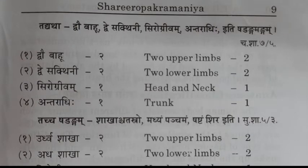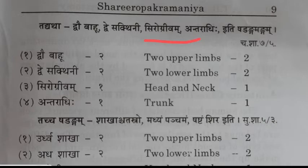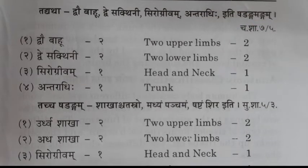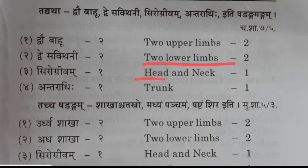Let's start our discussion on the shlokas. The first shloka is: Dwee Bhavu Dwee Sakthini Shirogrivam Antaradhire Hithi Shadangamangam. The meaning of this shloka is: Dwee Bhavu means two upper limbs, Dwee Sakthini means two lower limbs, Shirogrivam means head and neck, and Antaradhire Hithi means trunk — the middle portion.